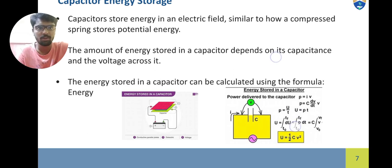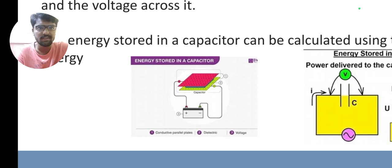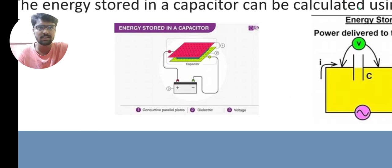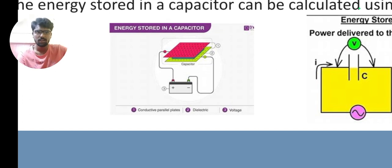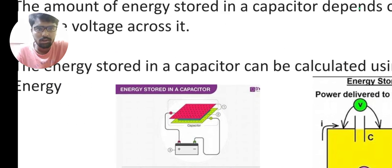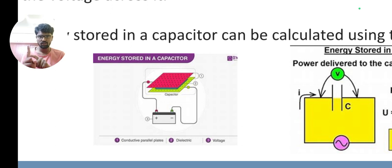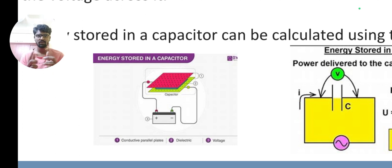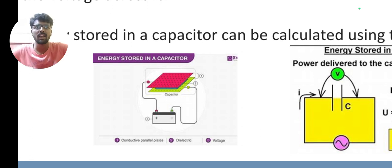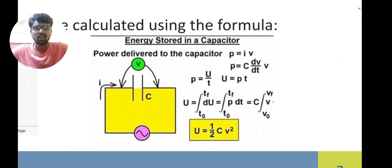Let us break down the formula. Basically, capacitor plates are connected to a battery. The positive plate is connected to the positive end of the battery and the negative plate is connected to the negative end of the battery. There are positive charges on one plate and negative charges on the other, which are attracted to each other and create a simple flow of charges.